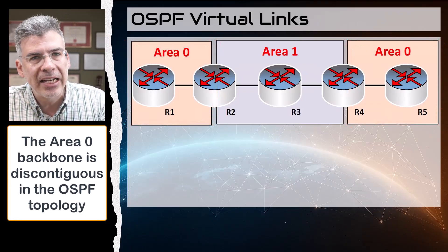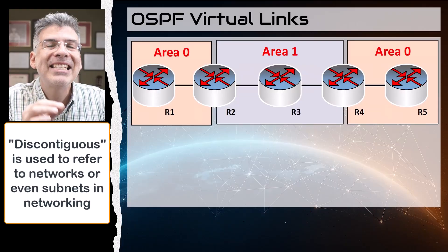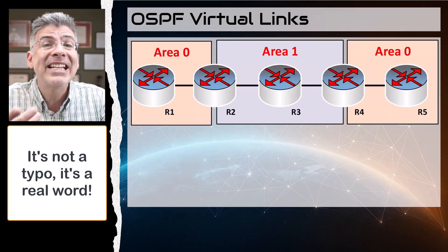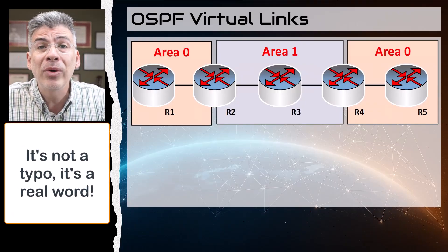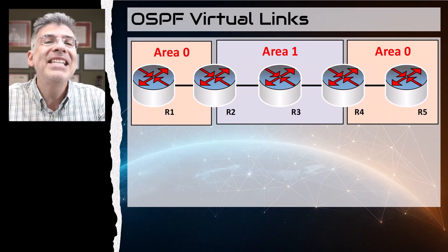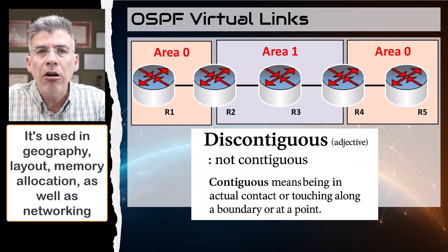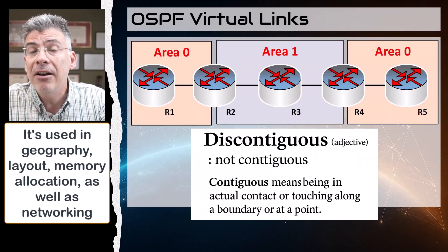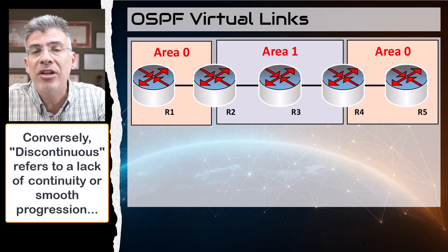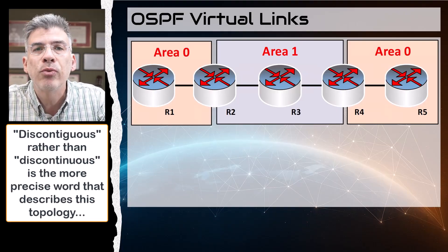Now this is just a small aside. In networking, we often refer to discontiguous networks or even discontiguous subnets. Some people think this is a typo or should be 'discontinuous,' and even some spell checkers don't know that word. But it's a real word and it is the proper word to use here. Discontiguous refers to things that are not physically adjacent or connected — often used in terms of geography, layout, memory blocks, and of course networks. It refers to a lack of continuity or smooth progression. Although 'discontinuous' could be used, 'discontiguous' is the more precise word.